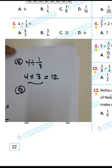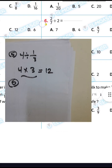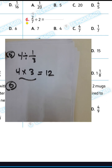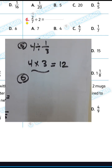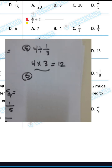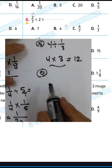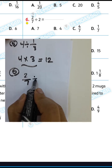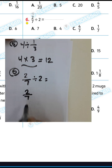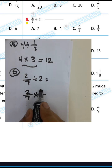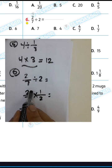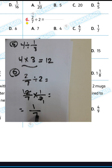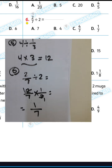Question number 6: 2 over 7 divided by 2. First, we can write 2/7 and convert from division to multiplication, then write the inverse of 2, which is 1 over 2. You can cancel the 2s. Then 1 times 1 equals 1, and 1 times 7 equals 7. The result will be 1 over 7.